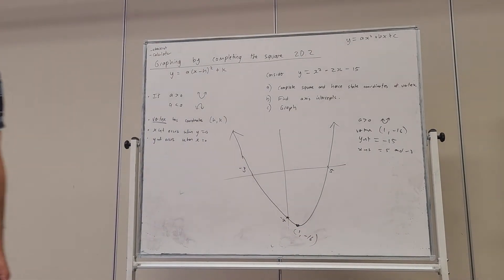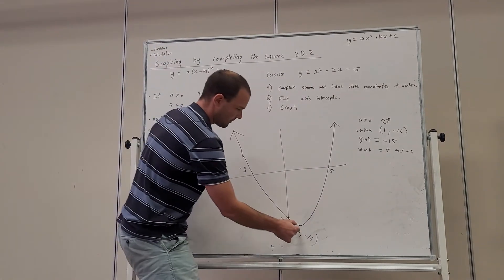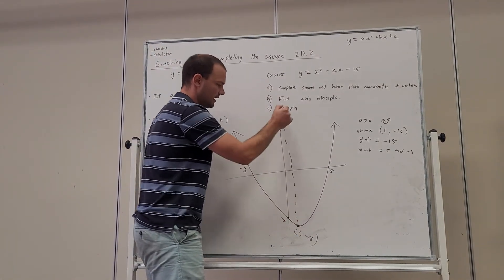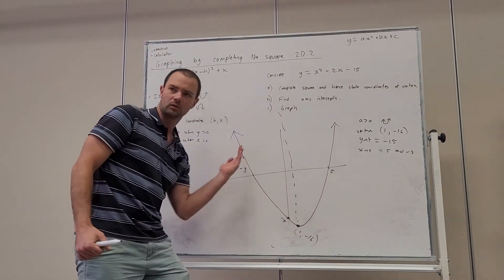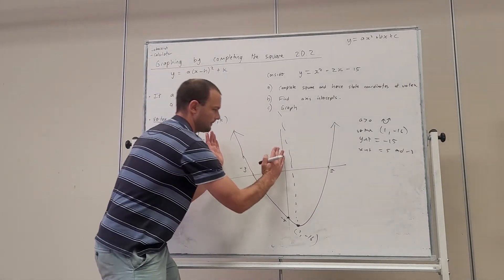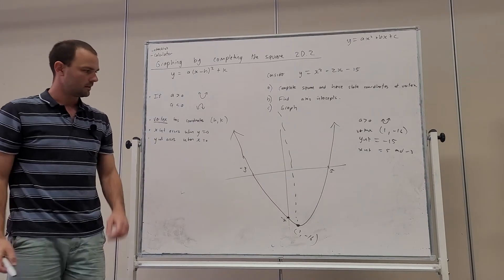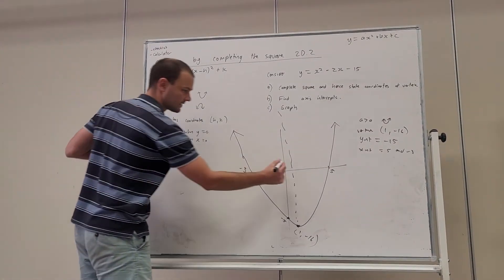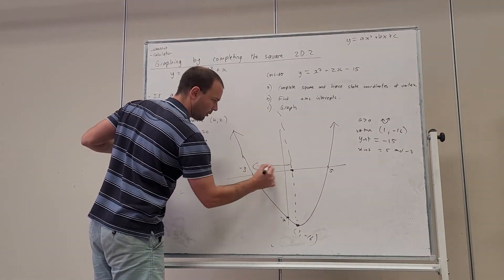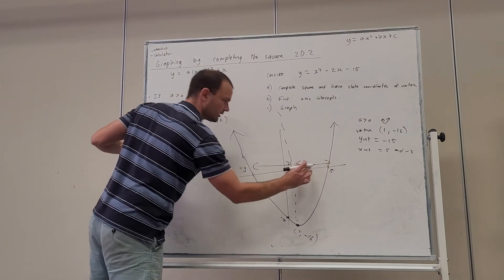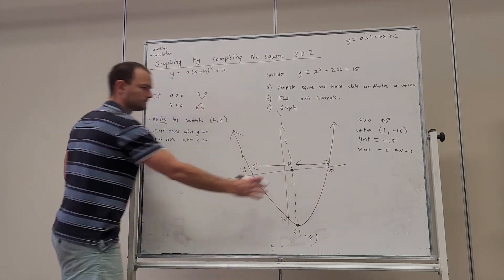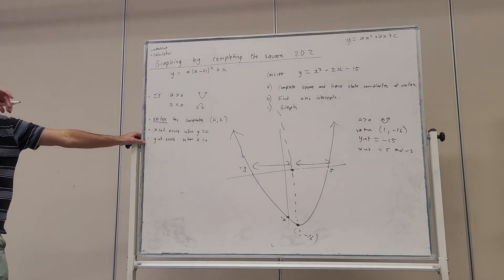This is the other thing you need to see, and we'll be unpacking this a bit more, is that the function is symmetrical about the vertex. You can fold it in half. You can see this is a mirror of this side. So that the vertex is exactly halfway between these two points. That's going to be the vertex there.